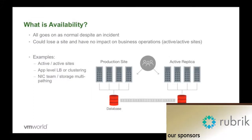So what is availability? Availability is something should fail and you don't notice. I could have potentially a host fail and you'd never know. I should be able to have a VM fail, a NIC fail, an HBA fail — even to the site level, I could potentially have an entire site fail and you don't know. When we start thinking about high levels of availability, this becomes very, very expensive.